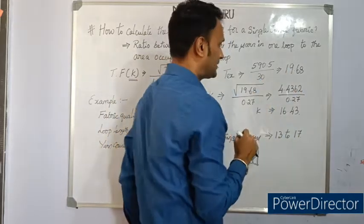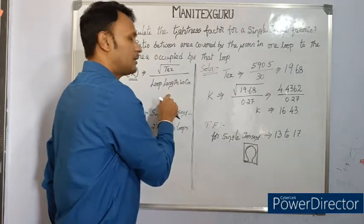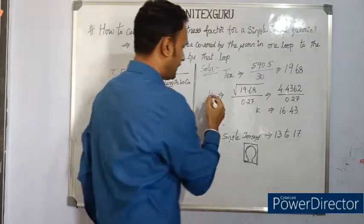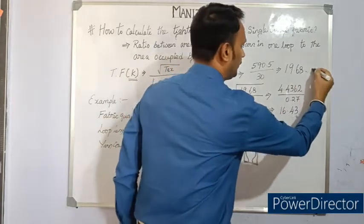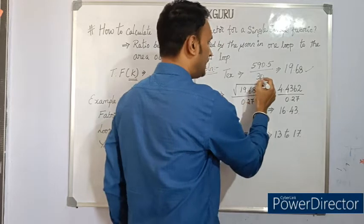Just apply this value in the formula: square root of Tex divided by loop length in centimeter. K is equal to square root of Tex. Tex we already know, we have calculated 19.68, square root of 19.68 divided by...